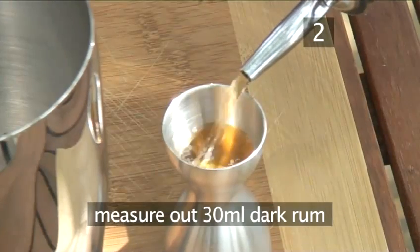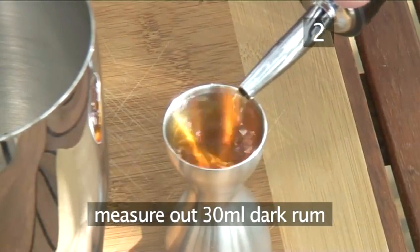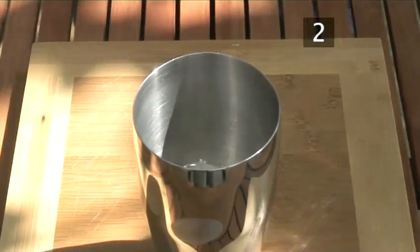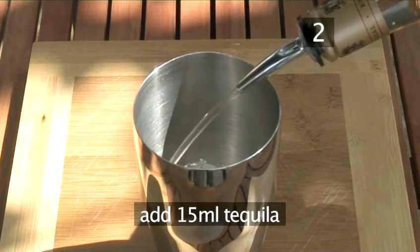Then measure out 30 milliliters or more or less a splash of dark rum and pour it over the ice. Next, add 15 milliliters or a dash of tequila.